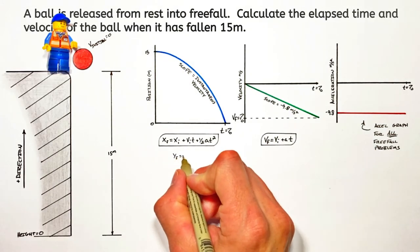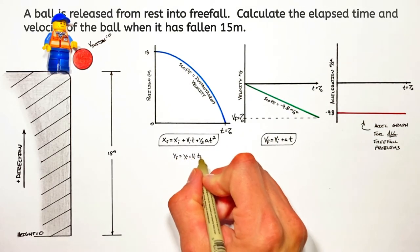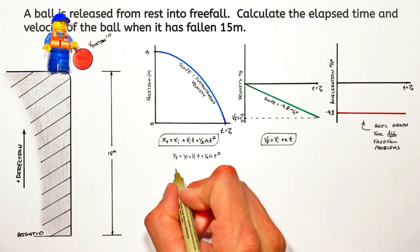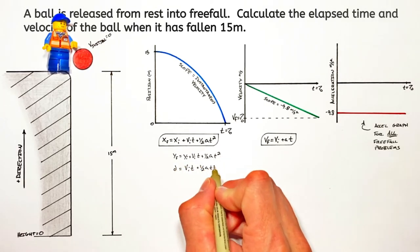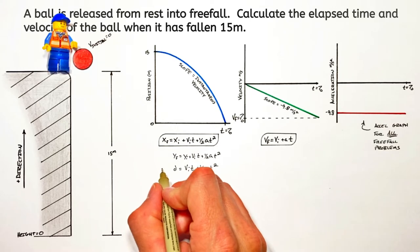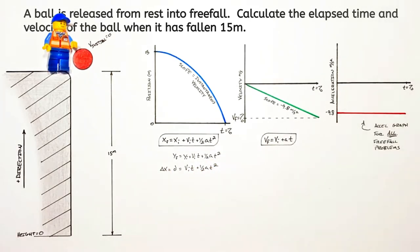Now when you get to free fall, some people will write this position equation using y's instead of x's. And other times people will just write it as a displacement equation, where displacement is the change in position. But first, let's solve for the total time this ball is going to spend falling.